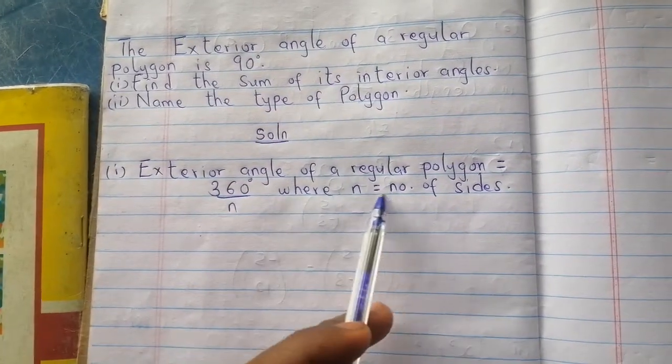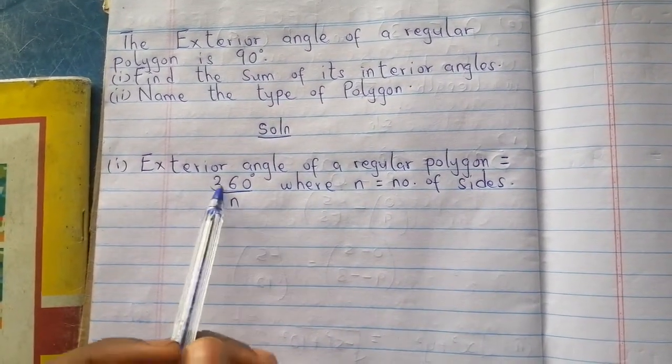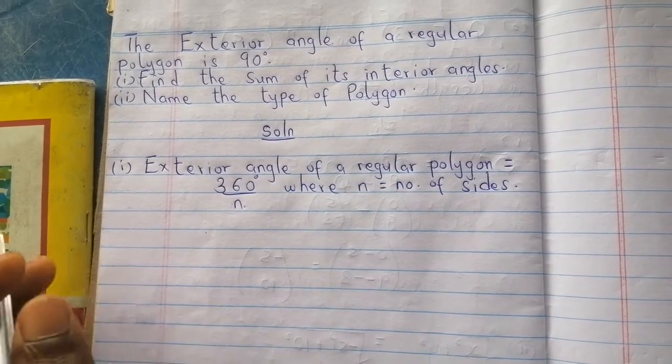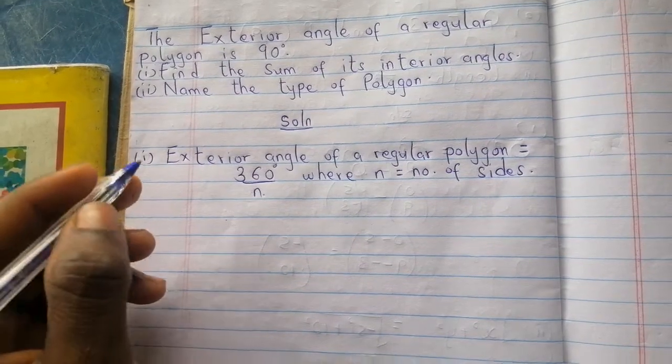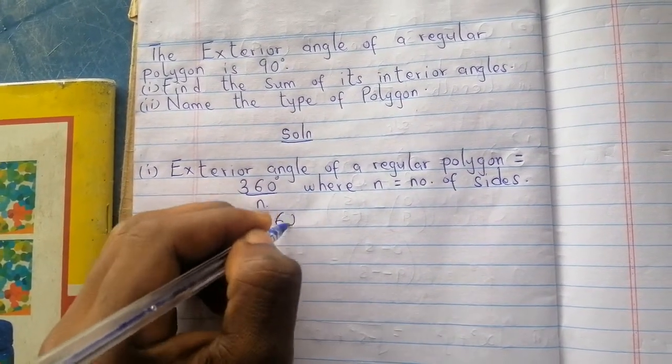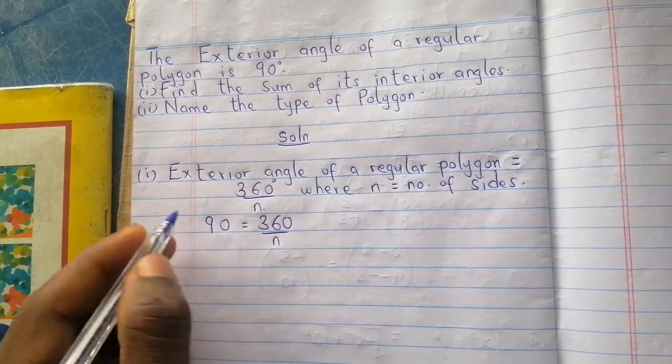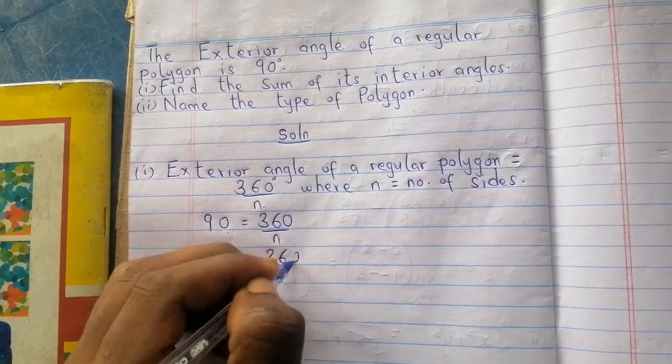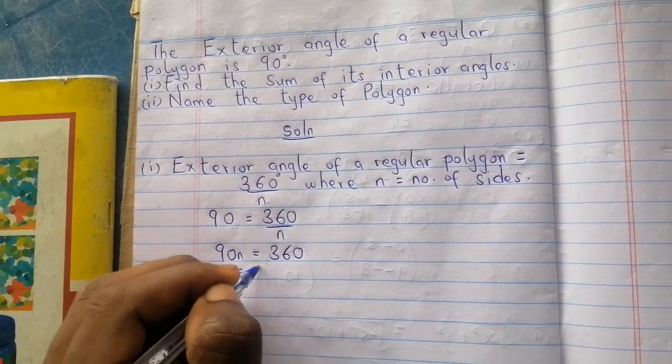Now the formula for finding the exterior angle of a regular polygon is given by 360 over n, where n is equal to the number of sides. In the equation, the exterior angle given is 90 degrees. So 90 equals 360 over n. Doing this, you get 90n equals 360. So n equals 4.